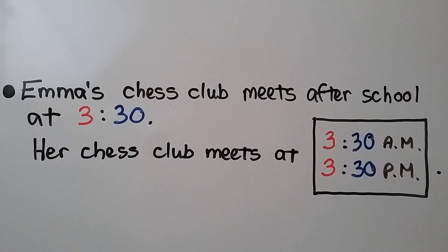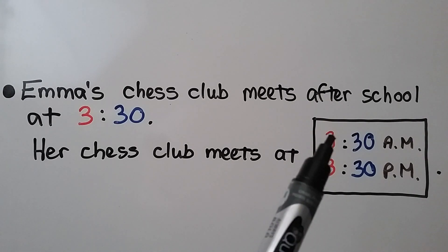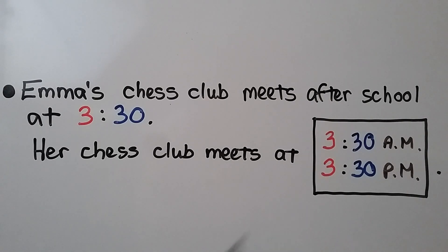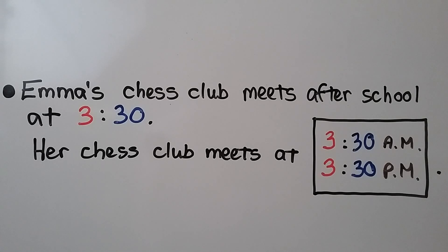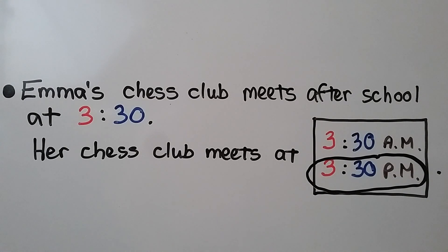Emma's chess club meets after school at three thirty. Her chess club meets at — is it 3:30 A.M. or 3:30 P.M.? Think about it: it's after school, so it would be afternoon. If you said 3:30 P.M., you're right. Things that we do after school would be in the P.M.